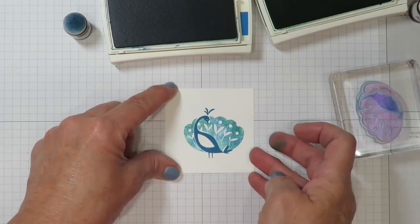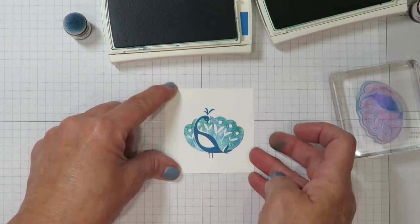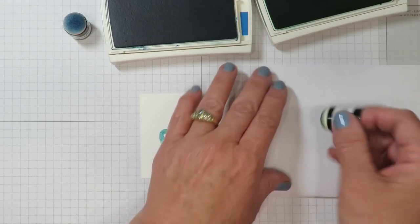There's no rhyme or reason to where you put it. Just kind of get it on there. And then I'm going to line this up. Lots of firm even pressure. And then we'll lift and you can see you've got that beautiful variegated tone of the feathers.